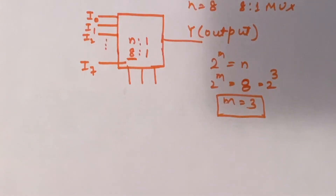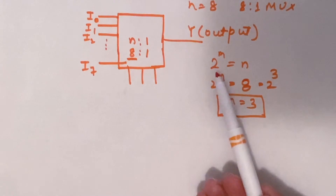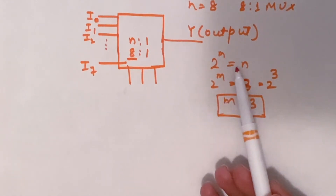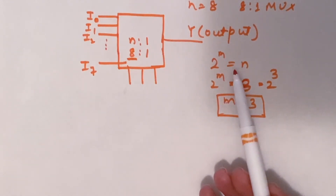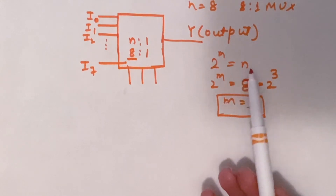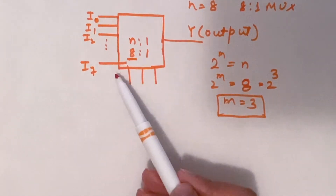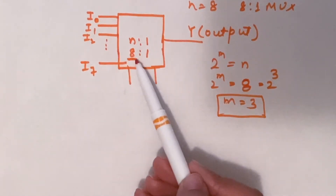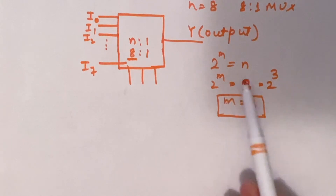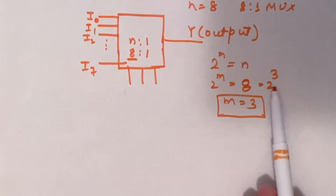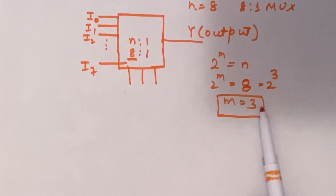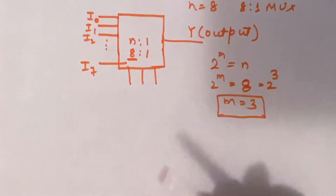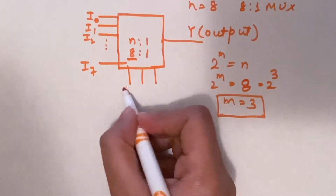To find the number of selection lines, we use the equation 2 to the power m equals n, where m is the number of selection lines and n is the number of inputs. Here n is 8, so 2 to the power m equals 8, that is 2 to the power 3, and m equals 3. So we have 3 selection lines.